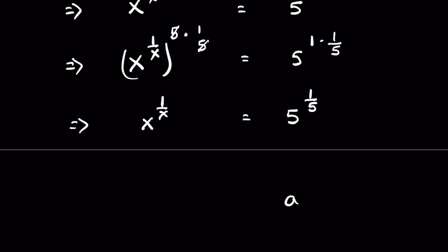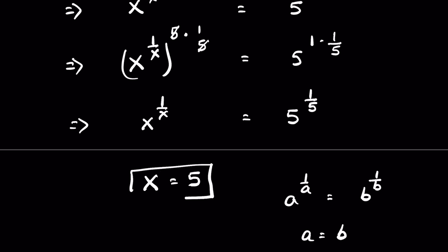This is in the form of a raised to the power of 1 upon a, equal to b raised to the power of 1 upon b. In this case, a is equal to b. Therefore, x is equal to 5. This is our answer.